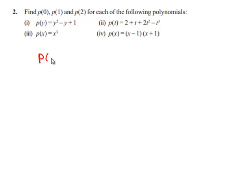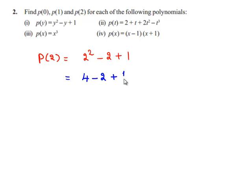p of 2 is equal to 2 square minus 2 plus 1. 2 square is 4, so we have 4 minus 2 plus 1. 4 minus 2 is 2, plus 1 becomes 3. Therefore, p of 2 is equal to 3.